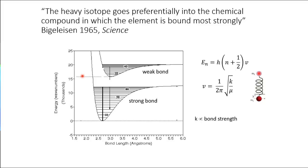Thinking about what this means on the energy diagram: a weak bond has a smaller gap between energy levels; a strong bond has a bigger ΔE and wider gaps between energy levels. So in a stronger bond, the heavy isotope is more likely to reside there. Under equilibrium conditions, heavy isotopes will preferentially partition into phases that have the stronger bonds.